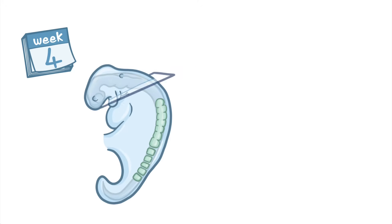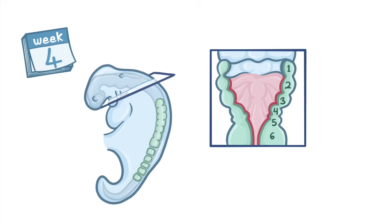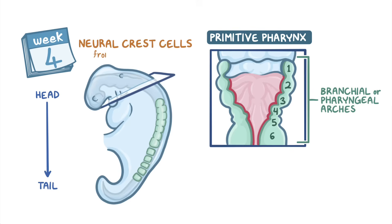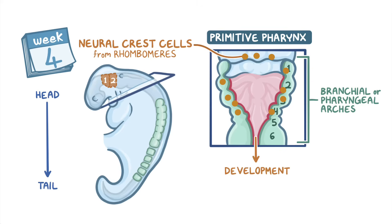At the same time, six little bulges or thickenings of the mesoderm sprout from the primitive pharynx to become the branchial or pharyngeal arches. These arches are paired, symmetrical bumps that form on each side on the lateral aspect of the embryo in a craniocaudal fashion, going from head to tail. At the same time, neural crest cells from the midbrain and the first two rhombomeres migrate bilaterally to the region and infiltrate the mesoderm bumps, where they support the development of embryonic connective tissue needed for craniofacial development, called ectomesenchyme.